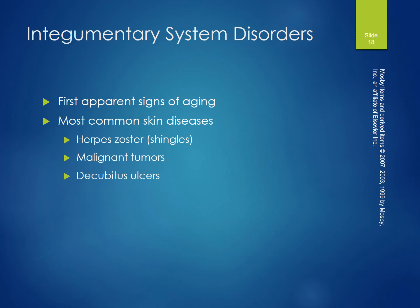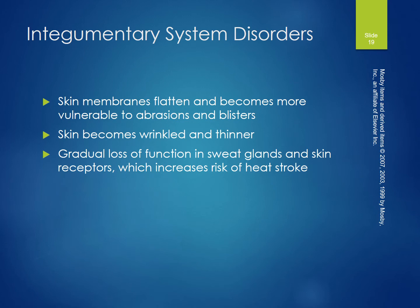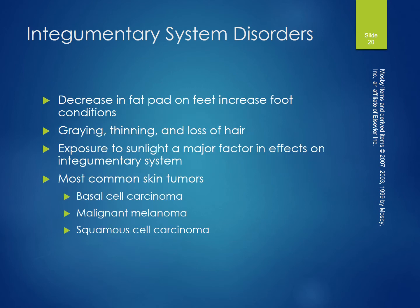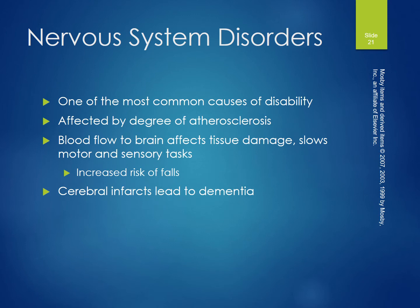The integumentary system shows the first apparent signs of aging. The most common skin diseases include herpes, ulcers, shingles, and malignant tumors. Skin membranes flatten and become more vulnerable to abrasions and blisters. Skin becomes more wrinkled and thinner. There is gradual loss of function in sweat glands and skin receptors, which increases the risk of heat stroke, along with decreased fat pad on feet and increased foot conditions, graying, thinning, and loss of hair. Exposure to sunlight is a major factor. The most common skin tumors are basal cell carcinoma, malignant melanoma, and squamous cell carcinoma.